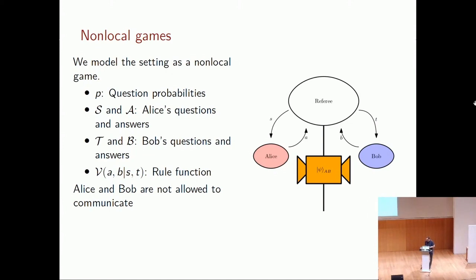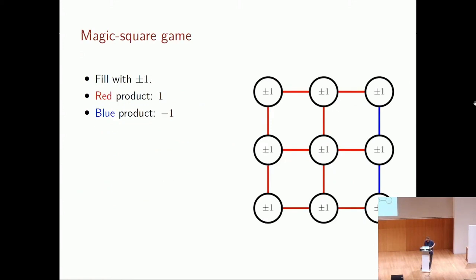Before the game starts, Alice and Bob are allowed to communicate and share strategy, but once the game starts they can no longer communicate. They are however allowed to share a quantum state beforehand. The game proceeds with the referee asking Alice and Bob each a question; they perform measurements on their state and supply back an answer.